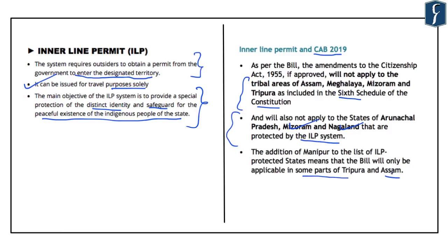Besides the Inner Line Permit, there are two other permit regimes: the Restricted Area Permit, applicable to Andaman and Nicobar — which came into news when a foreigner was killed while intruding into the area of the Sentinelese tribe — and the Protected Area Permit, provided for states which have international borders. Content related to the Restricted Area Permit and Protected Area Permit will be provided in today's PDF.